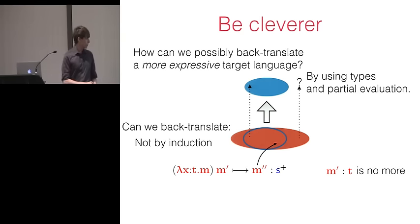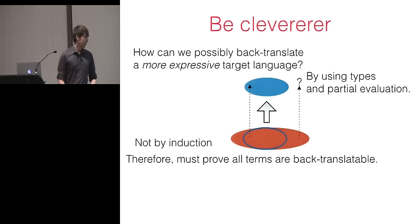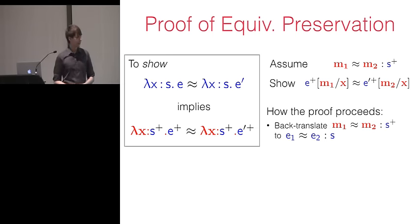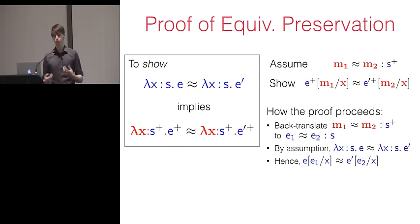The one problem is now that it's no longer inductively defined we actually have to prove that every term of translation type can be back translated so we develop a novel logical relations argument for this. It's similar to proving strong normalization via logic relation. Now with our back translation defined we can finish our proof of equivalence preservation. So the first thing we do is we take these related arguments M1 and M2 and back translate them to related source arguments E1 and E2. Then by assumption we have related source functions so we can apply them to related arguments and get related results and by induction QED.